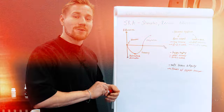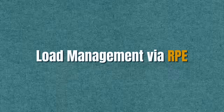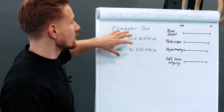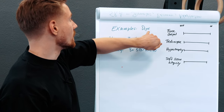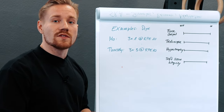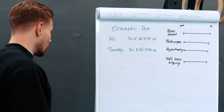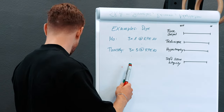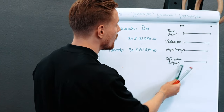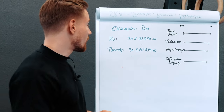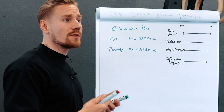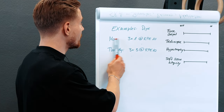The challenge is how to bring all those SRA curves together — and the solution is called load management via RPEs. Let's put what you've learned to a test with an example. We'll look at a dips program — super basic — just to show how you can work with SRA curves and what you can learn from them. We'll rate from 'not optimal' to 'optimal' how those SRA curves interact, and whether the system is sustainable and produces results.